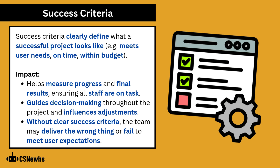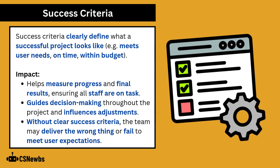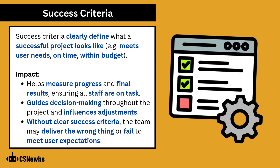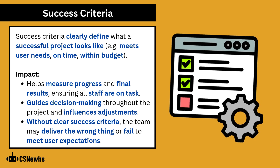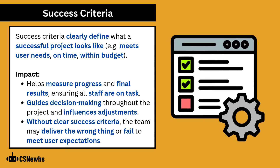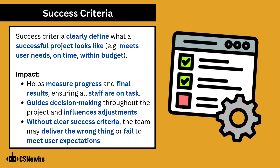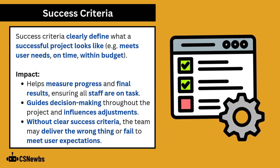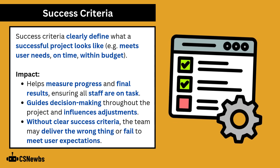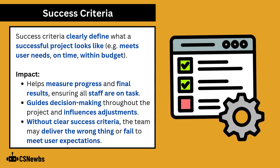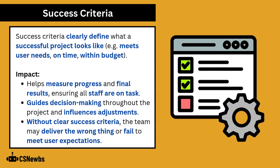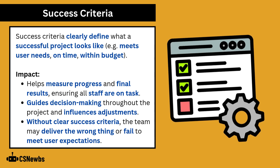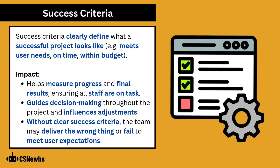Success criteria clearly define what a successful project looks like — for example, meeting user needs, being on time, and being within budget. They help measure progress and final results, ensuring all staff are on task. They guide decision-making throughout the project and influence any adjustments. Without clear success criteria, the team may deliver the wrong thing or fail to meet user expectations.